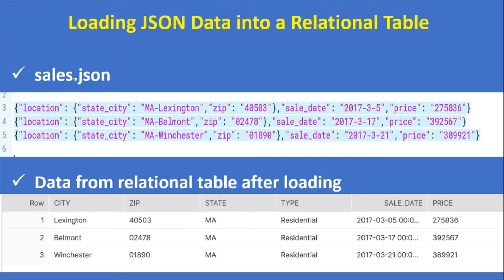Here you can see the data from the sales.json file where we have three records with location details — state, city, zip — and sales data including sales date and price. After loading the data, the expected output from the relational table should have columns: city, zip, state, type, sales date, and price.